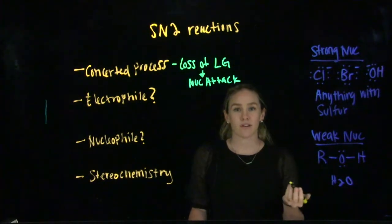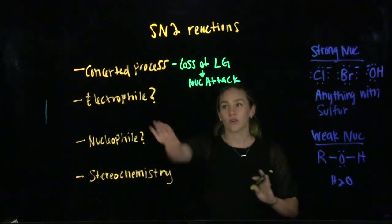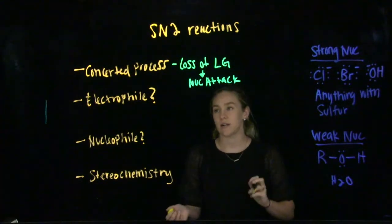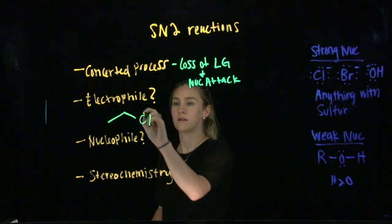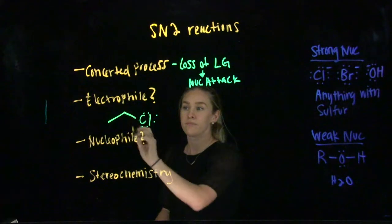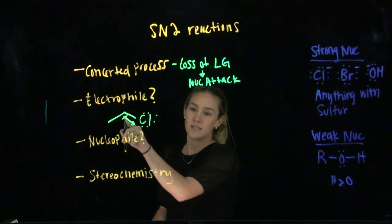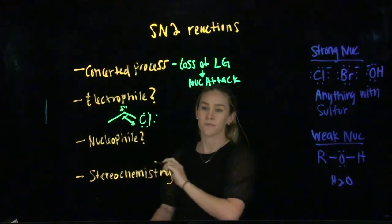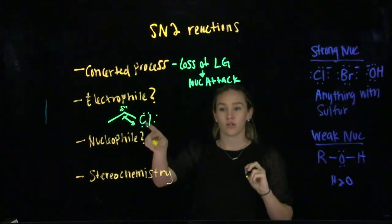The next big thing we need to cover that's specific to SN2 reactions is the electrophilic center. If we have a leaving group, we usually have an electrophilic center. Here is our leaving group. This chlorine is more electronegative than the carbon it's attached to, giving the carbon a partial positive charge. That partial positive makes that specific carbon a good electrophile.